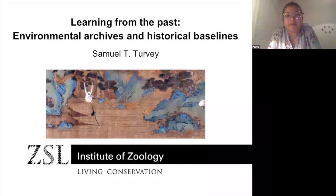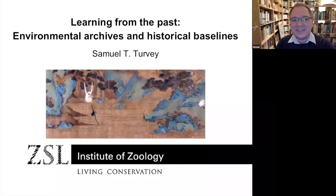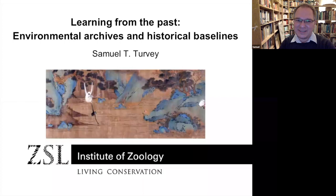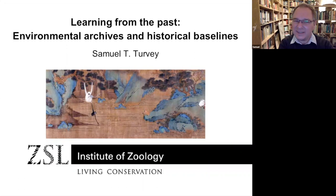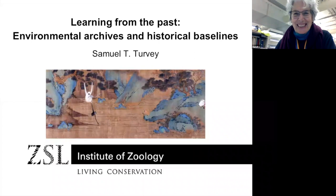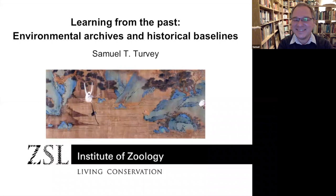While people are trickling in, Sam tells us about the painting. It's a historical Chinese painting from the late imperial period showing a pair of gibbons — a mother, father, and young gibbon — forming a chain from a tree reaching down to collect water. This epitomizes the talk's theme: there's a wealth of data from the past about biodiversity, but how can we separate the wheat from the chaff and find valuable, accurate information?